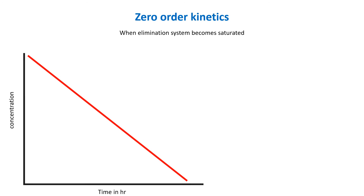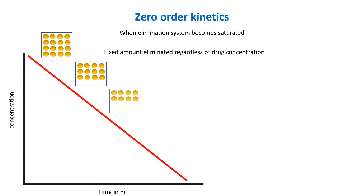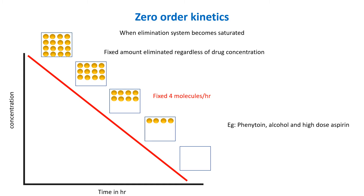So the system eliminates a fixed amount of drug per unit time, leading to a fixed elimination rate rather than a constant proportion. The elimination rate does not depend on the drug concentration, making the relationship between dose and drug level non-linear. Drugs like phenytoin, alcohol, and high doses of aspirin follow zero-order kinetics at therapeutic or higher concentrations.